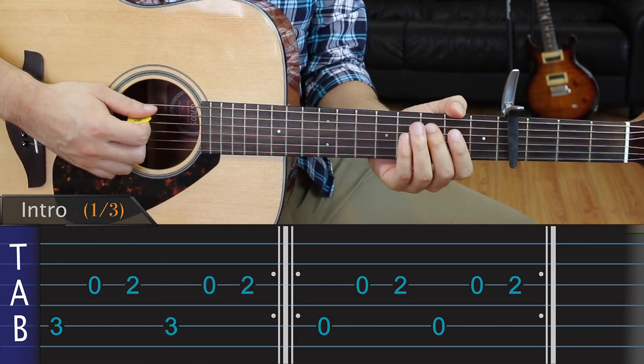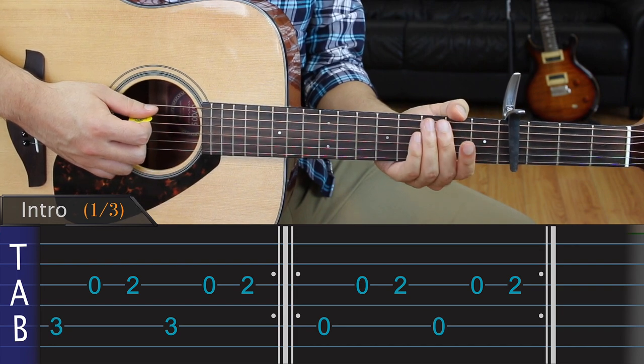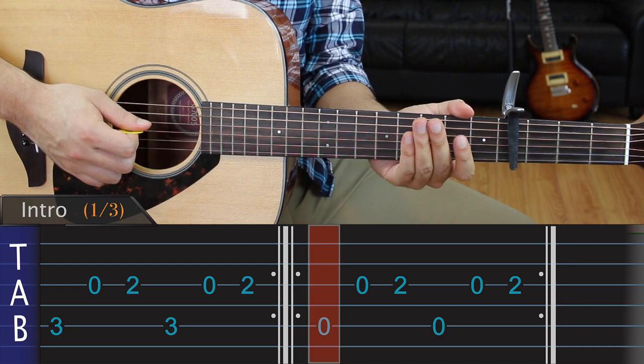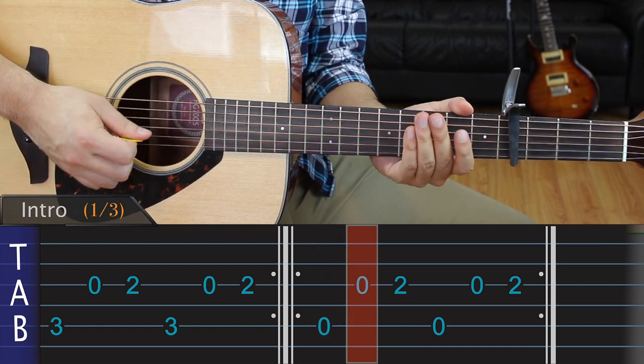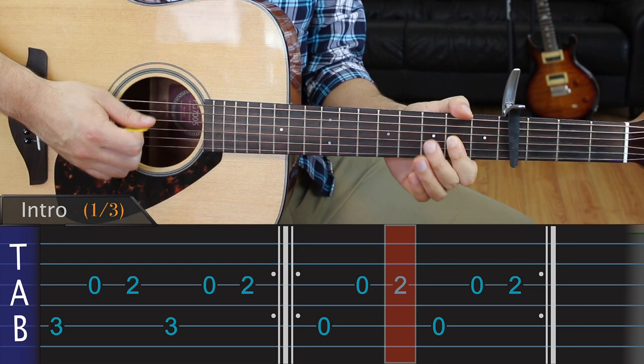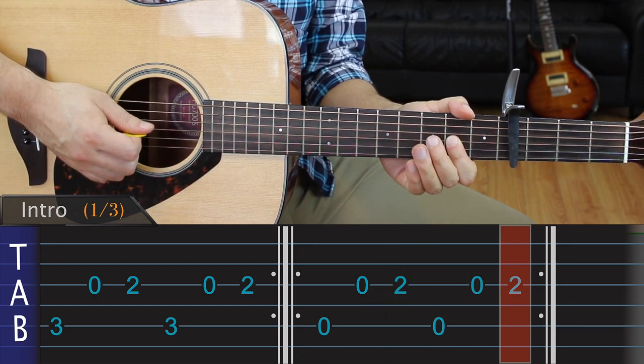The next part is really easy, there's only one difference between this section and the first one. We take our finger off of the third fret and play the A string open, like this. The rest of the section is exactly the same as the first. We play an open G, followed by the second fret of the G, and repeat the same three notes, and then repeat the entire pattern one more time.